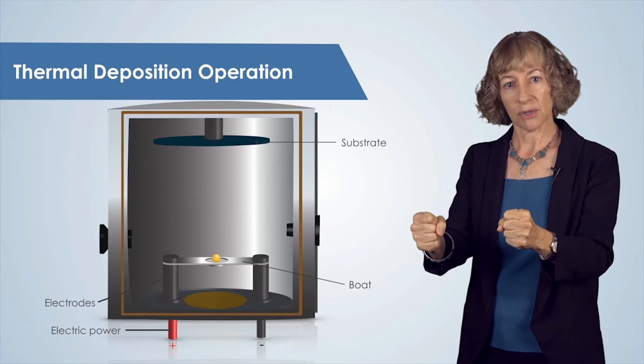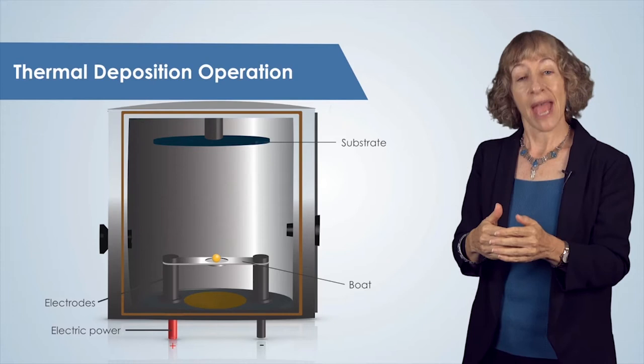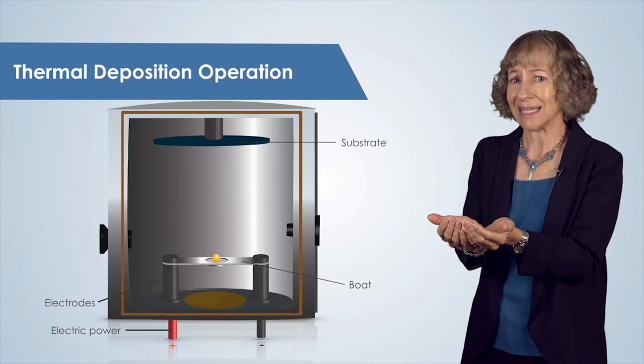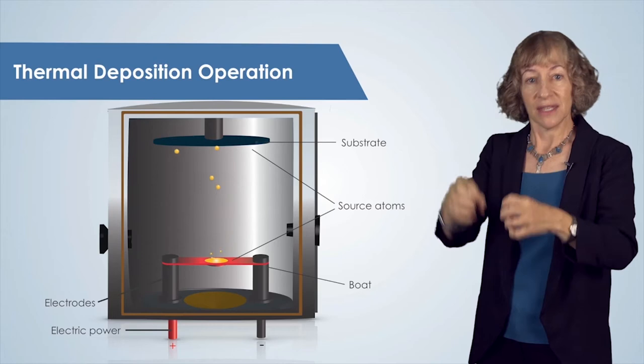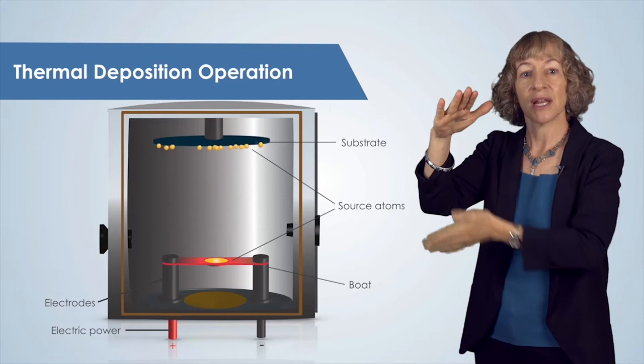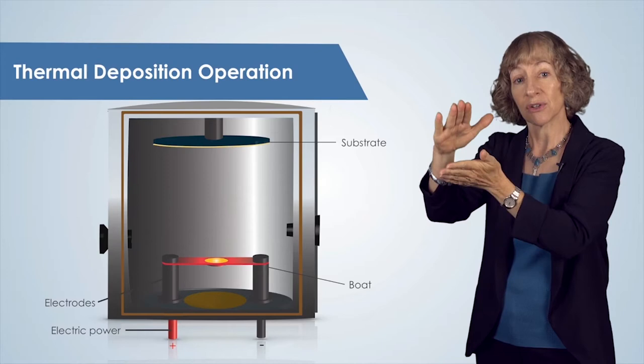Let's look at the mechanics of thermal deposition. The tungsten boat is clamped between two electrodes. An electric current as high as several hundred amps passes through the tungsten boat, which undergoes resistive heating — just like an incandescent light bulb filament, it heats up and glows. As the boat heats up, the metal source material melts and then evaporates. These evaporated metal atoms travel through the vacuum chamber, strike the surface of the substrate, and condense, forming our thin layer of source material on our substrate.